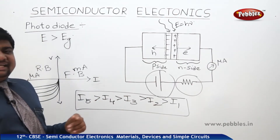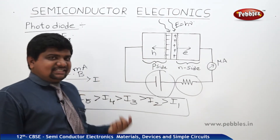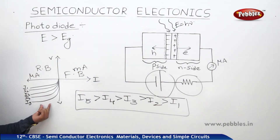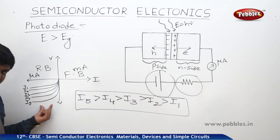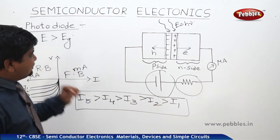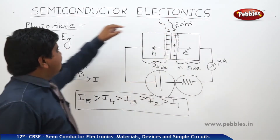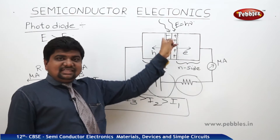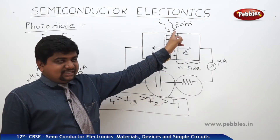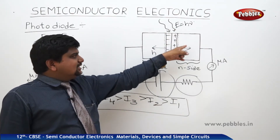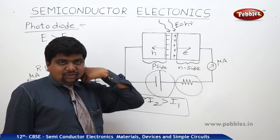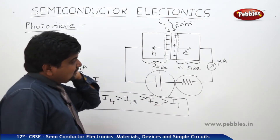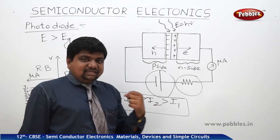This photodiode is essentially a PN junction diode working in reverse bias. This is the information about the photodiode. Unless E is greater than EG, recombination takes place in the depletion region. Once the energy is greater than EG, the carriers can diffuse and drift towards the P-type and N-side of the conducting materials.